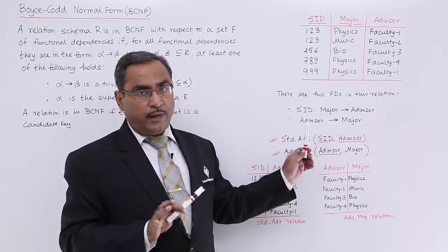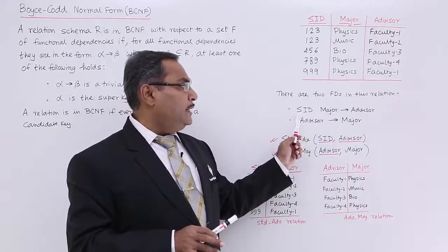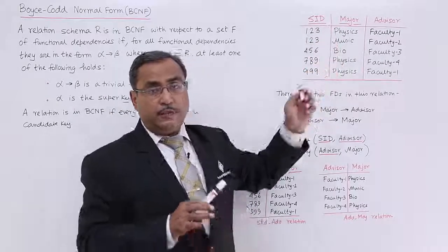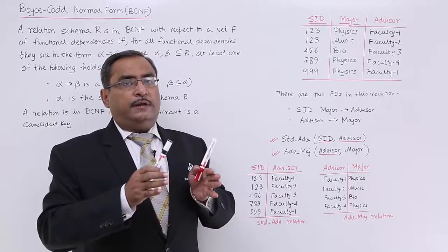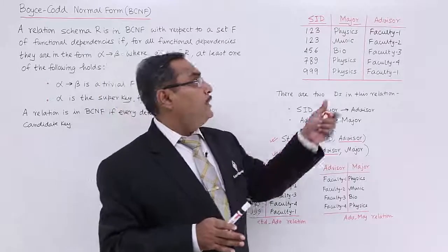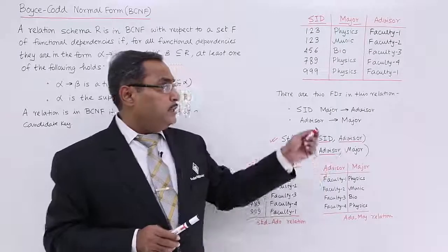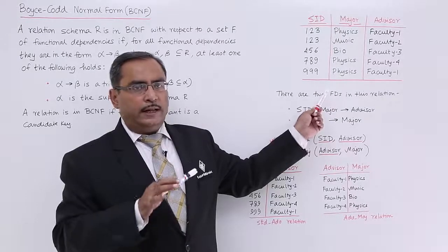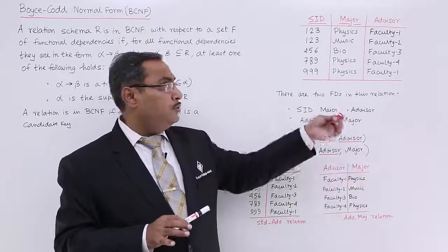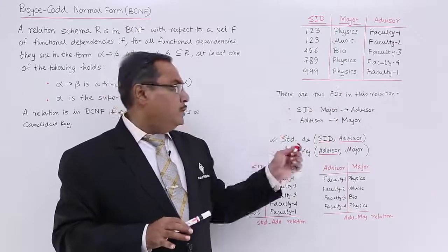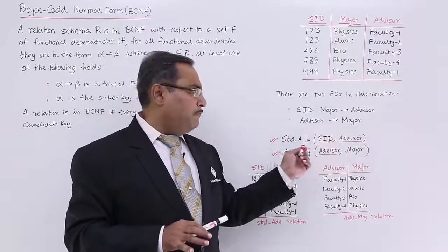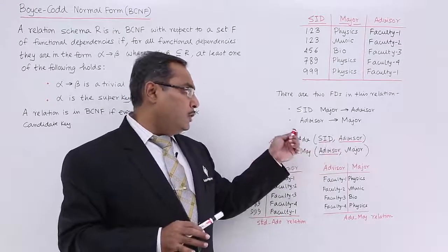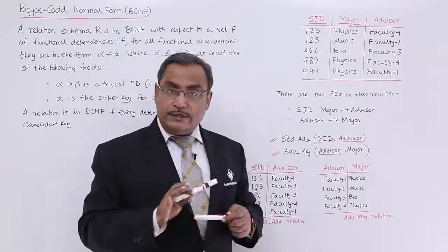These two functional dependencies are derived from this relation. Student ID and major are prime attributes forming a composite primary key — when more than one attribute forms a primary key, it is also called a composite key. Advisor is a non-prime attribute. This relation is in 1NF because there is no non-atomic data at the intersection of rows and columns and no repeating groups. It is also in 2NF because there is no partial dependency.